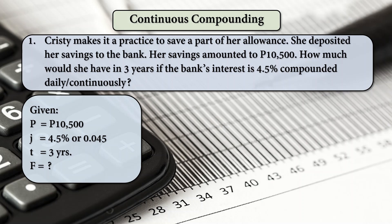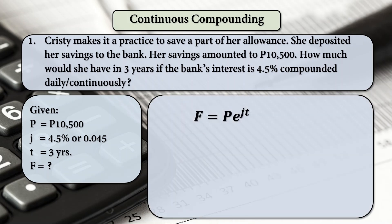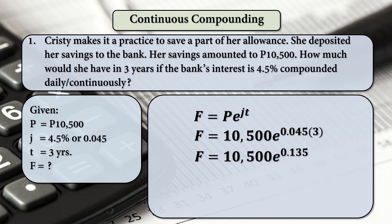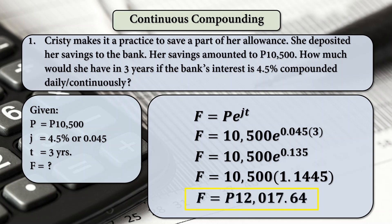P is 10,500, J is 0.045, and T is 3 years. Using the compound amount formula with continuous compounding: F equals 10,500 times E raised to 0.045 times 3. That is 0.135, and E raised to 0.135 equals 1.1445. Times 10,500, that is equal to 12,017 pesos and 64 centavos — the same answer. Take note: if you cannot find E on your calculator, substitute the value 2.71828, then raise it to the given exponent.